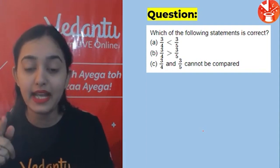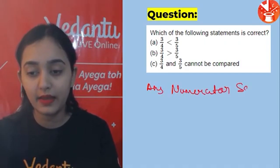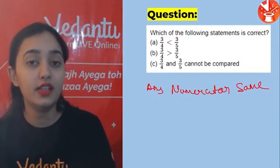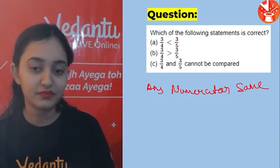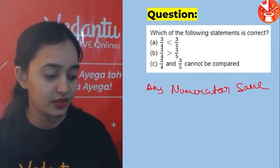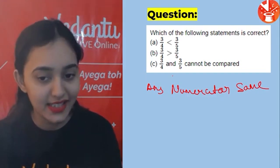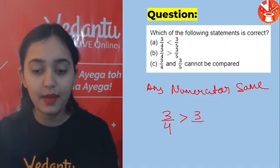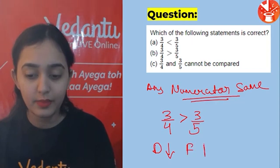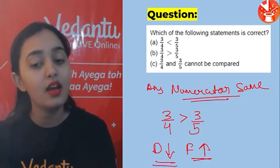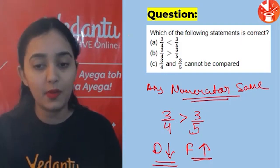Next: which is greater — 3/5 or 3/4? When numerators are the same, the fraction with the smaller denominator is greater. Since 4 < 5, therefore 3/4 > 3/5. The correct option is B.